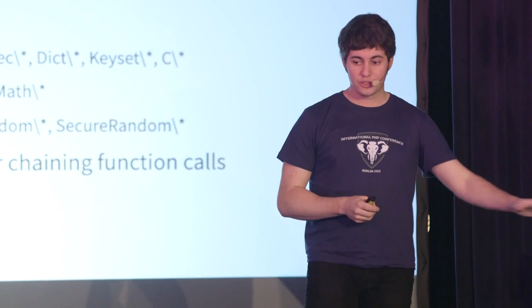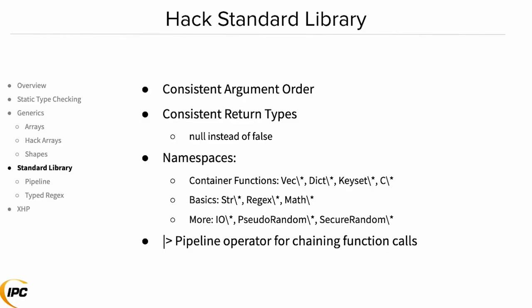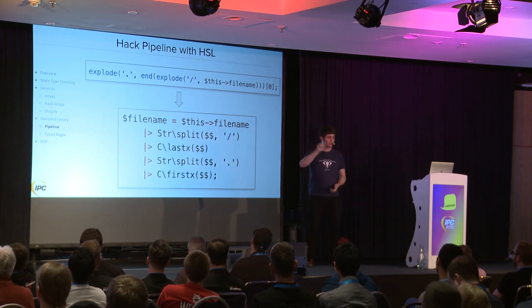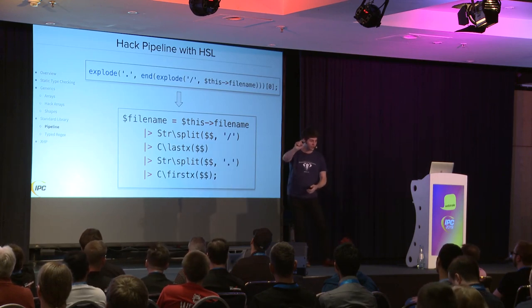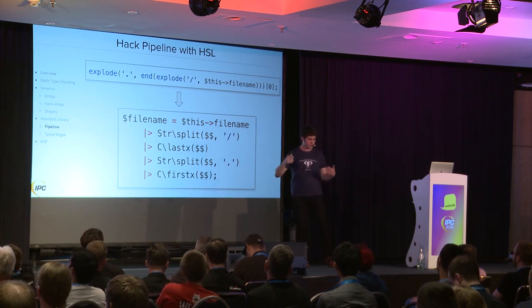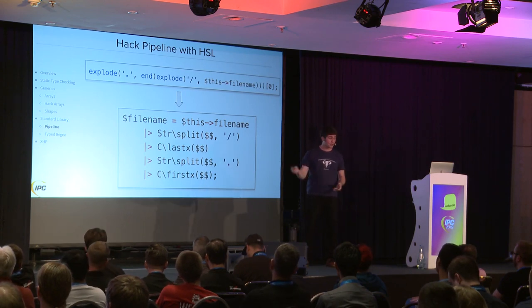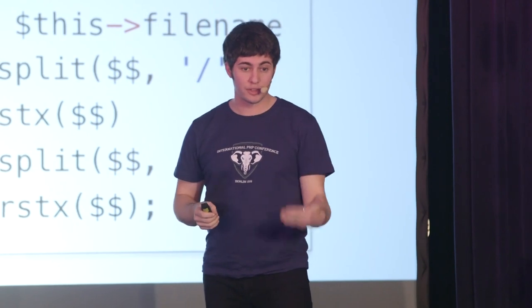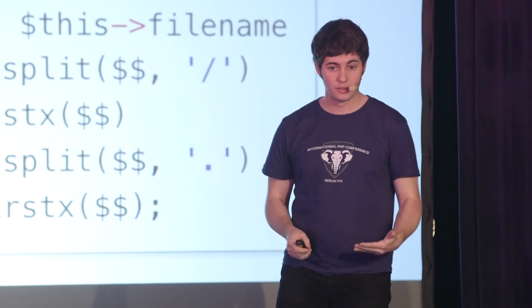With the Hack Standard Library (HSL), there's a new standard library that solves some of these problems. The primary argument of a function is always the first one. Things that would have returned false now return null, and everything is namespaced so it's easier to find functions. And there's a pipeline operator that lets us chain function calls. That same example rewritten with HSL — the magic is the double dollar sign, which refers to the results of the previous element of the pipeline. We start with the file name, pipe it to the string split function, pipe that to the last function to get the last element, pipe that to string split again to get the dots, and then get the first element. The same code, but you read it in the order it runs — you can make sense of the way the computer will actually process the code.